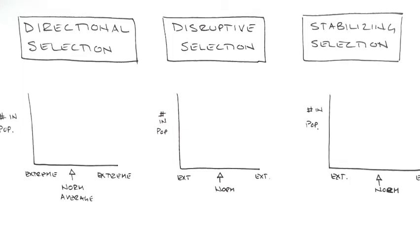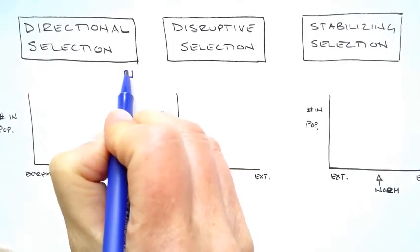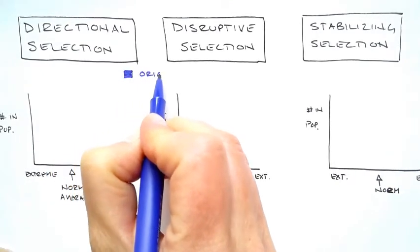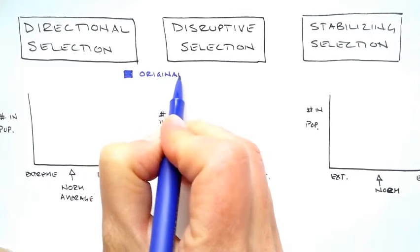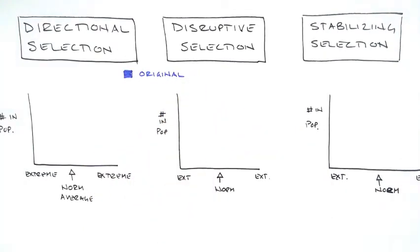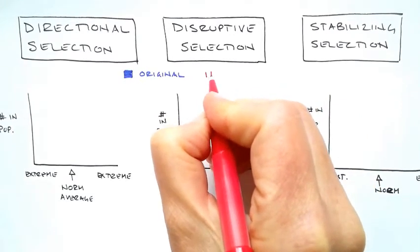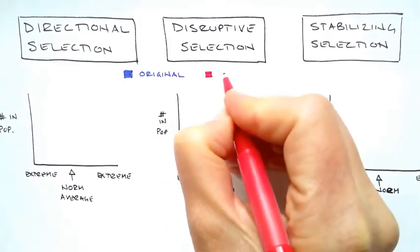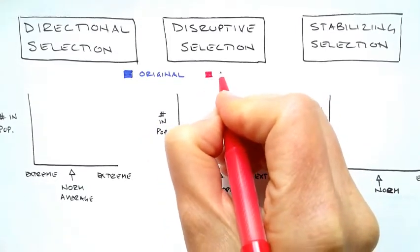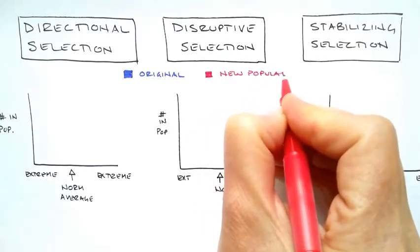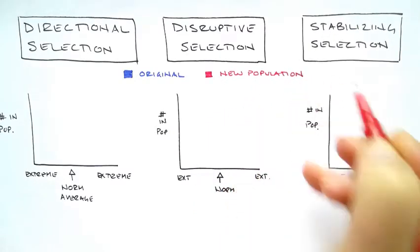And the first color I'm going to use is blue. Okay, and so this is my original population. That's my original population. And then I'm going to be using red. So after a period of natural selection and time has gone by, this is going to be my evolved or new population. This will make more sense once we get to the videos.